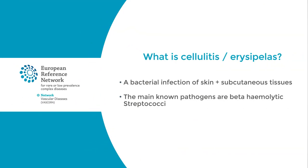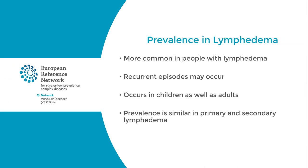Cellulitis, which is also known as erysipelas, is a common problem for people with lymphedema. It's thought to be caused mainly by beta-hemolytic streptococci. It's common in people with primary lymphedema and secondary lymphedema and can occur in adults and children. Cellulitis is a bacterial infection affecting the skin and the subcutaneous tissues. Recurrent episodes can occur in people with lymphedema.